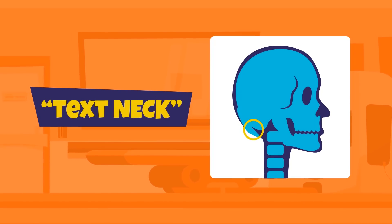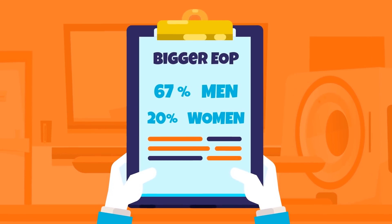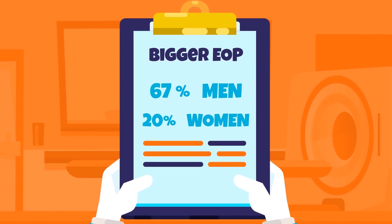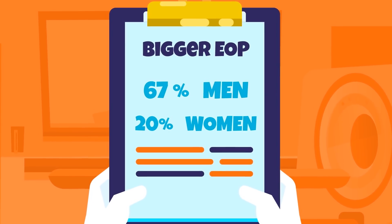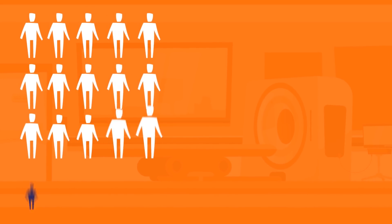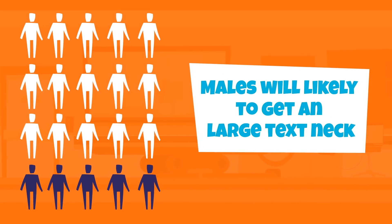The findings also reveal that it was mostly found in men. In 2016, Shothart and Sayers reported a bigger EOP in 67% of men compared to 20% of women, based on a test group of 218 people. By 2018, they had looked at 1,200 people, with males appearing to be five times more likely to get these large text necks.